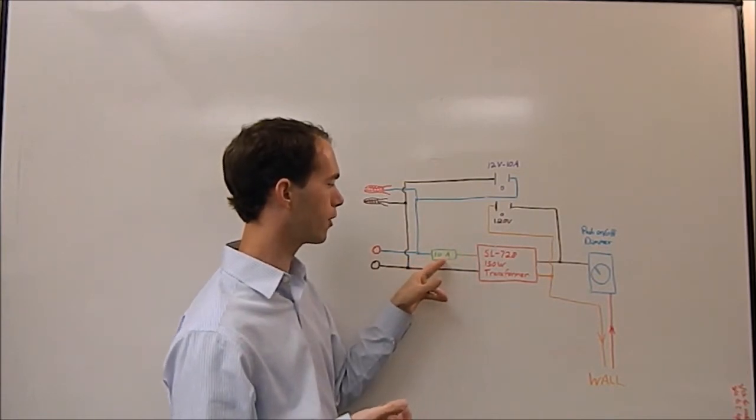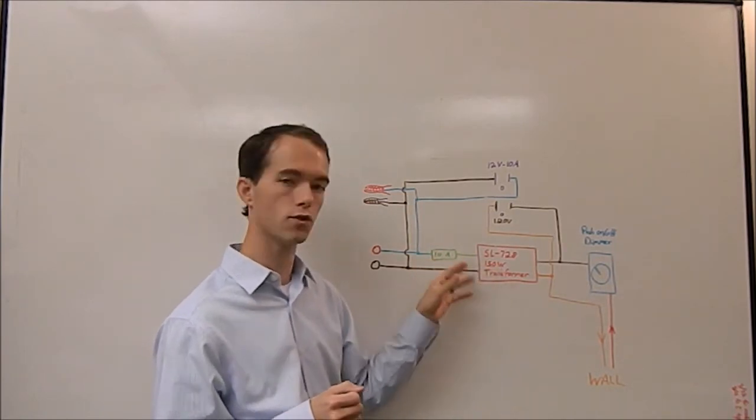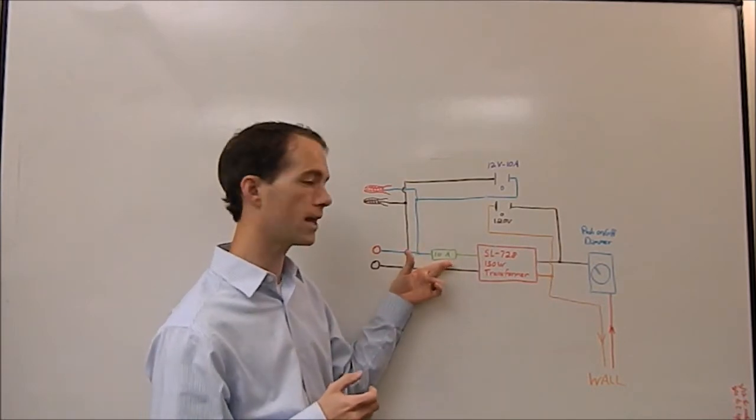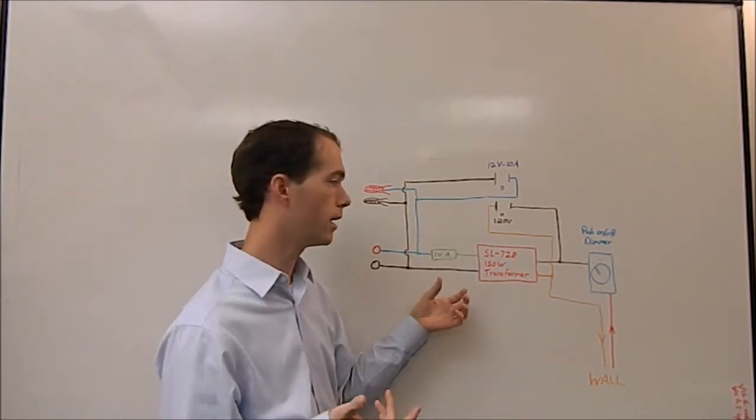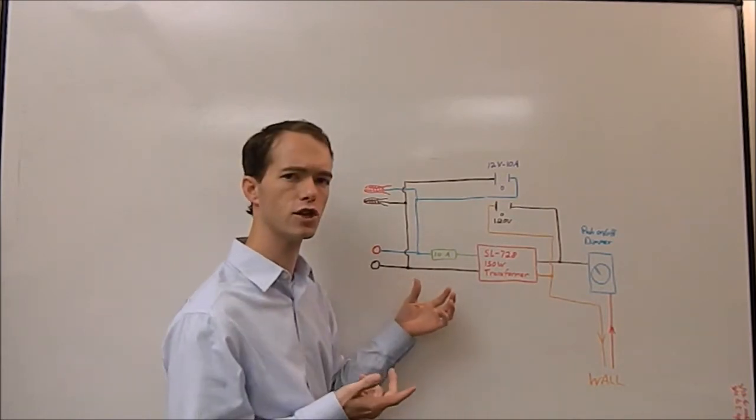Coming out of this on the secondary side of my transformer I run into a 10 amp fuse. Now 150 watts at 12 volts means this is going to output 12 and a half amps. I put a 10 amp fuse in so that I have a 2 and a half amp safety margin. It's a lot easier to replace fuses than transformers, and a lot cheaper too.